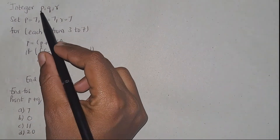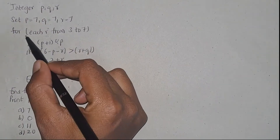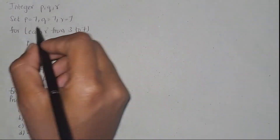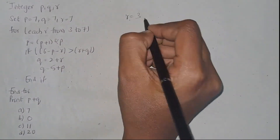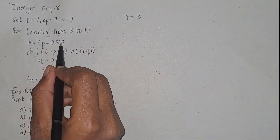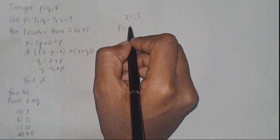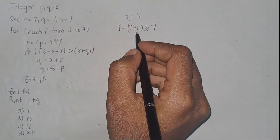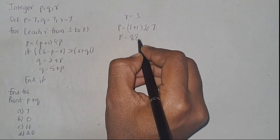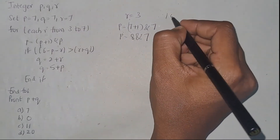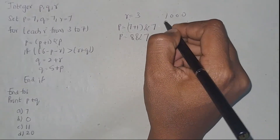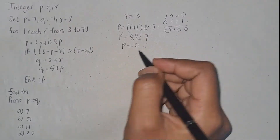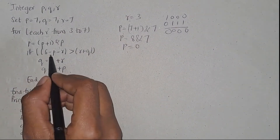In the next pseudo code they have given p, q, r and you have to do a for loop for iterations 3 to 7. They have assigned r equals 3. Now we have to perform p equals p plus 1 bitwise AND p, that means 8 bitwise AND 7. Performing the bitwise AND you will get 0, so p will be 0.